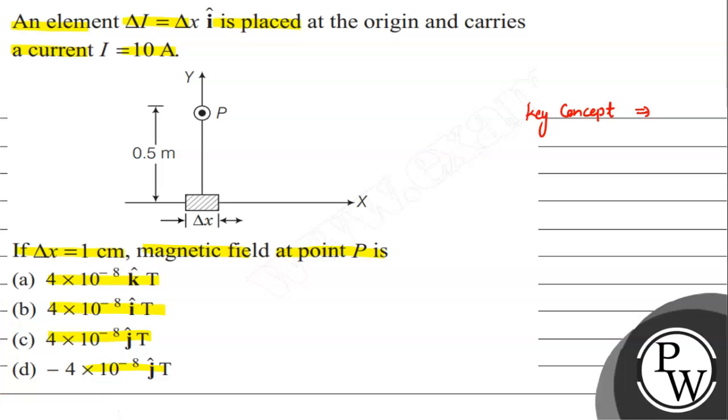The Biot-Savart Law states that dB = (μ₀/4π) × I dl × r̂ / r². This can be written as dB = (μ₀/4π) × I dl sin θ / r², where θ is the angle between the current element and the position vector.